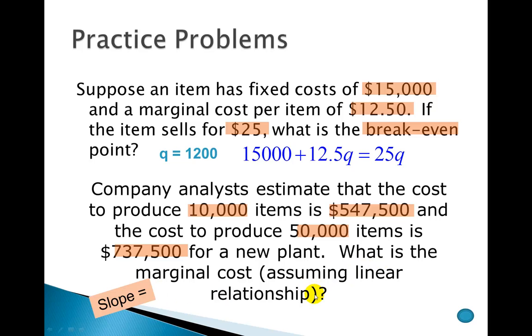So I have this information here, two data points. I've got a quantity, I've got a cost, and quantity and a cost. And so I want to calculate slope. Remember slope is change of cost over the change in quantity. When you do that, you're going to get a value of $4.75 per unit, and that's our marginal cost.